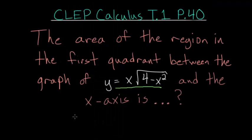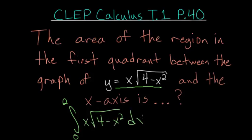We can find that by taking the integral from x equals 0 to x equals 2 of x times the square root of 4 minus x squared dx. You can notice that underneath the square root, it's a little bit complicated, so let's see if we can do a simple u substitution.